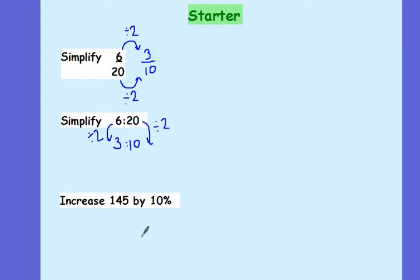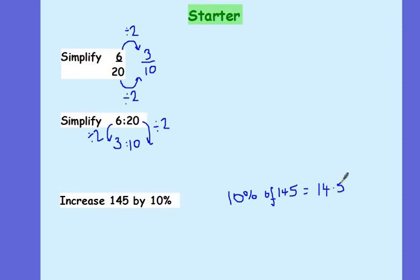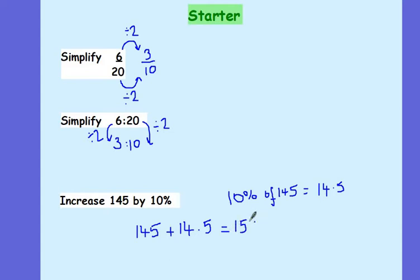And finally, a little bit of percentages. I want to increase 145 by 10%. My first question, Emily, what is 10% of 145? 14.5. Lovely. We've just divided it by 10. It says I need to increase 145 by 10%, so I need to take my original 145, add on my 10%, which was 14.5, which will give me what, Joseph? 159.5. Lovely, thanks very much.